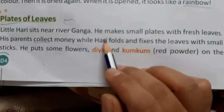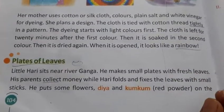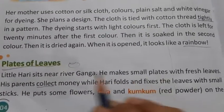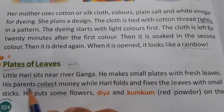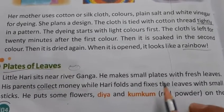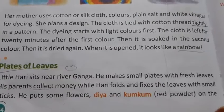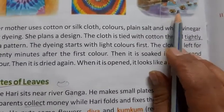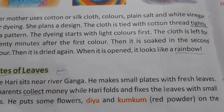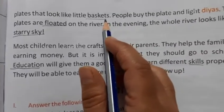He makes small plates with fresh leaves — normally banyan tree leaves or peepal leaves — and makes what we call pattal. His parents collect money while Hurry folds and fixes the leaves with small sticks. He puts some flowers and kumkum on the plates, and the plates look like little baskets.